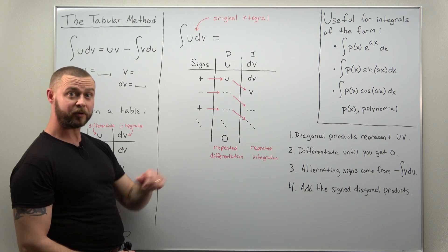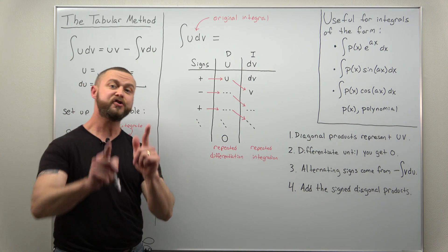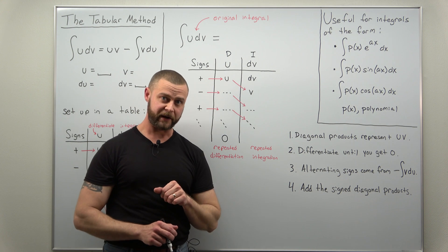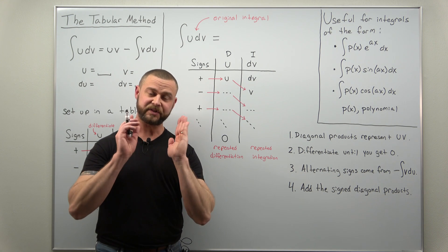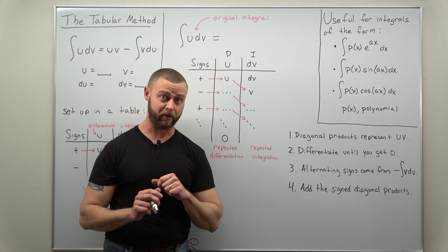Eventually when you get down to zero times the next diagonal, that's just going to come out to zero for everything thereafter. So eventually for the simple problems, when you get zero that tells you it basically terminates. This is the setup for the tabular method.